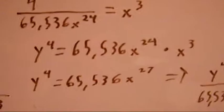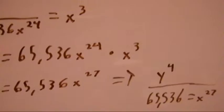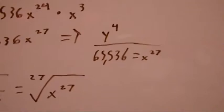Y to the 4th equals 65,536x to the 27th.